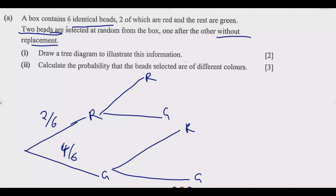If in the first pick we chose red (the top branch), we are not replacing it, so we remain with 1 red out of the remaining 5 beads. The greens are unchanged, so the chance of picking green on the second pick is still 4 out of 5. That's because one red was removed, reducing the total from 6 to 5, but the green count stays at 4.